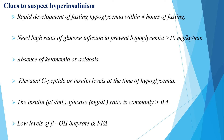Features that suggest hyperinsulinism include rapid development of fasting hypoglycemia within 4 hours of fasting, a need for high rates of glucose infusion to prevent hypoglycemia (more than 10 mg/kg/minute), absence of ketonemia or acidosis during hypoglycemia, elevated C-peptide or insulin levels at the time of hypoglycemia, an insulin-to-glucose ratio greater than 0.4, and low levels of beta-hydroxybutyrate and free fatty acids.